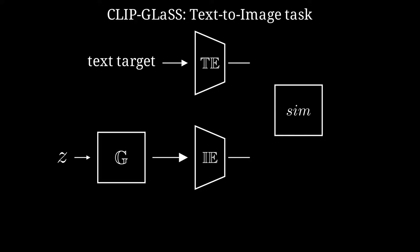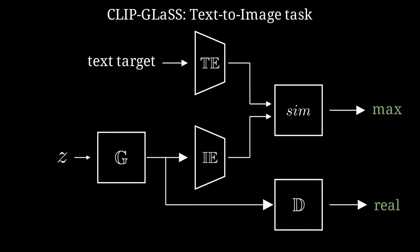Then, given a Z, we compute the similarity between the embeddings of the generated image and the ones from the target text. We also compute the discriminator output of the image. Our objective is then to maximize the similarity between those embeddings and classify the image as real.